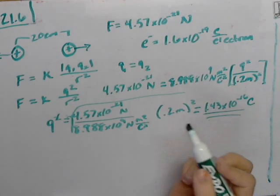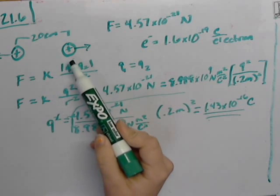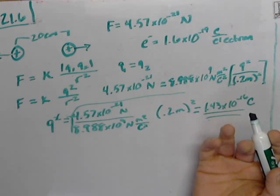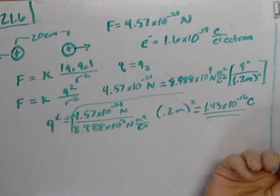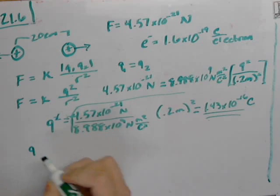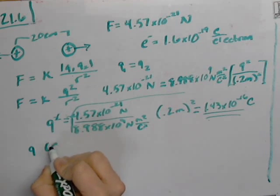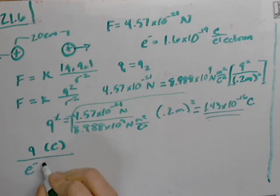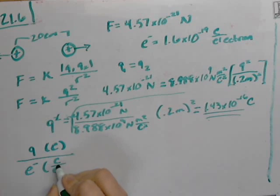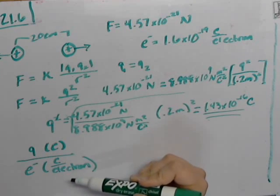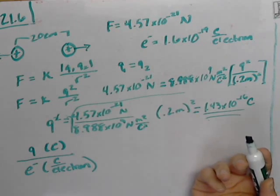The next step, now that we have the total charge that is present here, is trying to figure out how many electrons are on the outside to make this charge happen. So what we do is we take the total Q, which is in coulombs, and we divide it by this constant that we already know, which is the charge per electron, which we can see after you cancel out the units, you're going to get how many electrons are there.